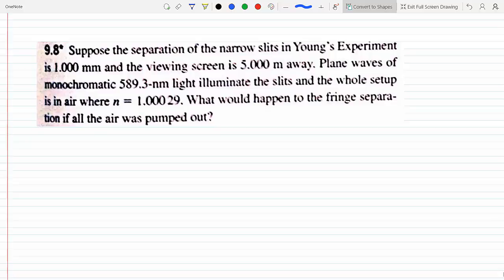Okay, so this is problem 9.8 from the fifth edition. I don't think this question is in the fourth edition, but let's go ahead and do it. It says if the separation is one millimeter and the viewing screen is five meters away, plane waves illuminate the slits and the whole setup is in air where n is greater than one, what would happen...